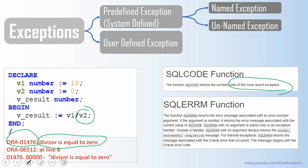So from interview point, you just need to say two information. One is SQLCODE returns the most recent exception's code. Whereas SQLERRM returns the description of the exception.